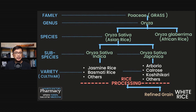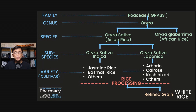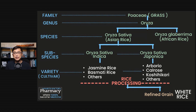White rice simply refers to refined grain rice where the bran and germ layers of the rice grain are removed during rice processing. So white rice can come from any variety or cultivar of rice, and there are thousands of different varieties of rice consumed around the world. When we talk about white rice, we are not referring to a specific variety or cultivar, but simply referring to the refined grain version of any of the thousands of different varieties of rice.